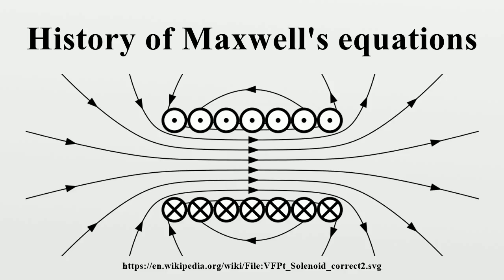The apparently disparate laws and phenomena of electricity and magnetism were integrated by James Clerk Maxwell, who published an early form of the equations, which modified Ampère's circuital law by introducing a displacement current term. He showed that these equations imply that light propagates as electromagnetic waves. His laws were reformulated by Oliver Heaviside in the more modern and compact vector calculus formalism he independently developed.